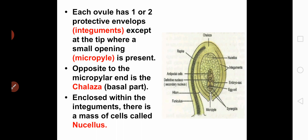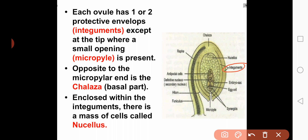Each ovule has one or two protective envelopes, and these envelopes are called integuments. These integuments do not completely cover the ovule — they leave a small area uncovered. This uncovered area is in the form of an opening, and that opening is called the micropyle. Opposite to the micropyle, the basal part is present and this basal part is called the chalaza.